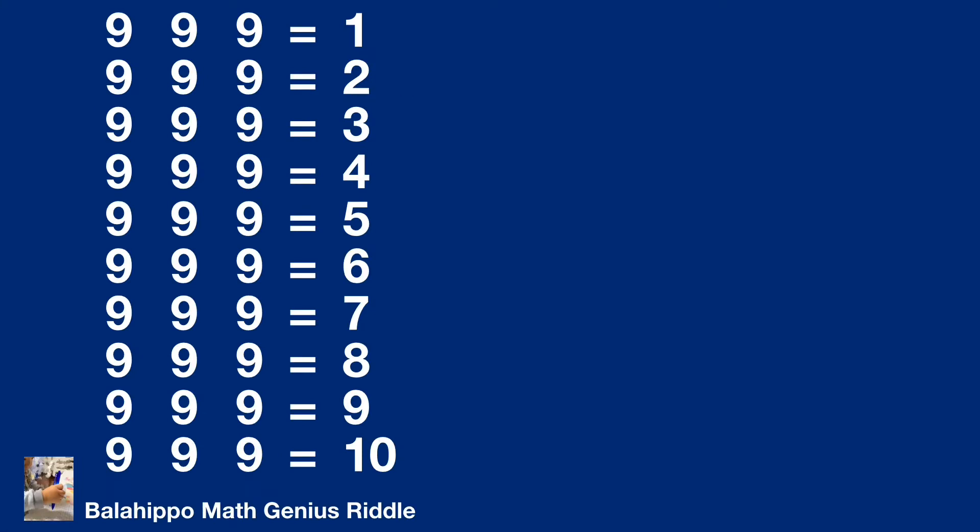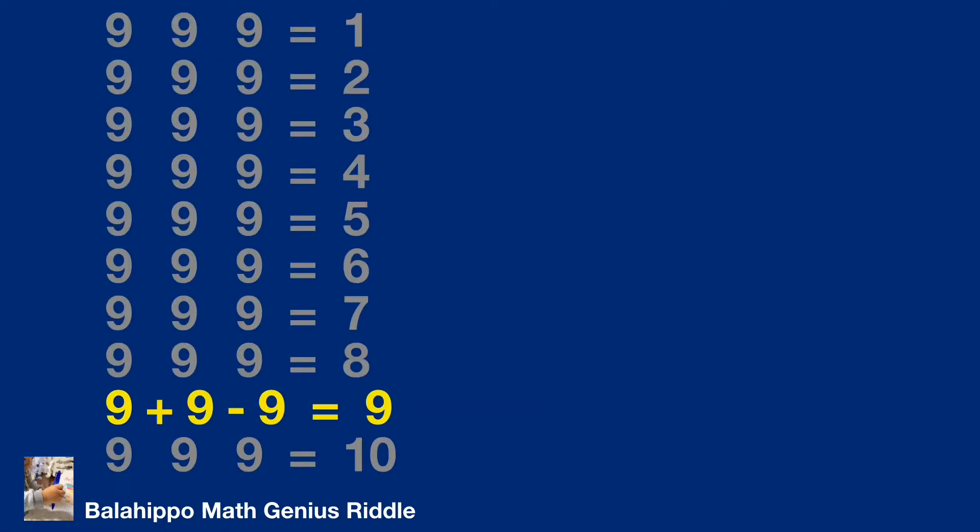Let's think straightforward. 9 plus 9 minus 9 equals 9. We have the first one.